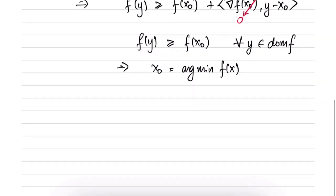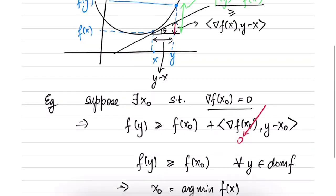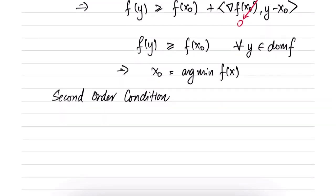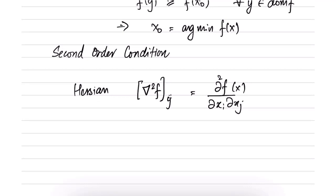The first order condition can only be applied when the function is differentiable. There is also the second order condition, which requires the function to be twice differentiable — the second derivative must exist at all points. The Hessian of the function is a matrix whose (i,j)-th entry is the second partial derivative of f with respect to x_i and x_j, for i, j from 1 to n.